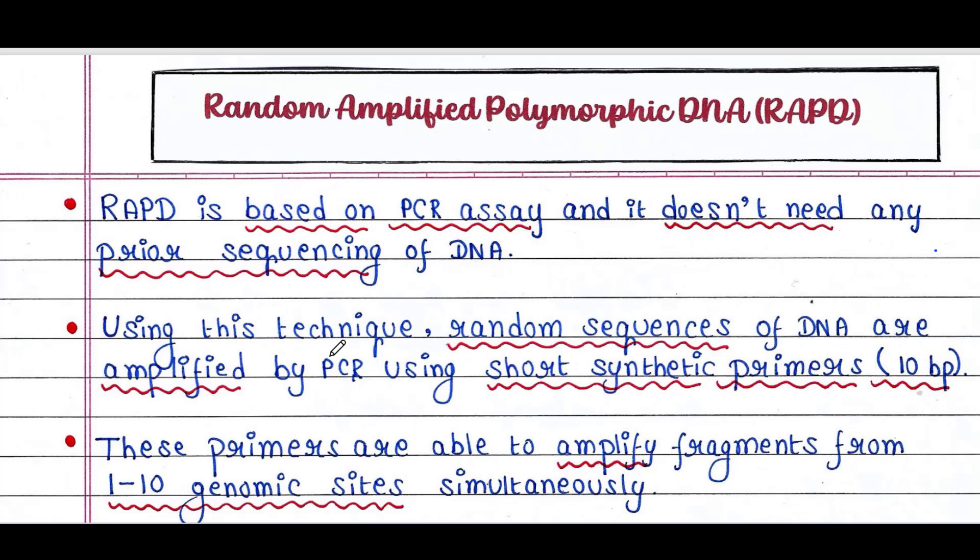Using this technique, random sequences of DNA are amplified by PCR using short synthetic primers like 10 base pairs. Basically, in RAPD, primers are non-specific. They randomly anneal to the DNA sequence and start amplifying. These primers are very short, like 10 base pairs.